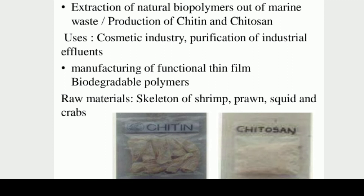Extraction of natural biopolymers out of marine waste includes production of chitin and chitosan. Uses include the cosmetic industry, purification of industrial effluents, manufacturing of functional thin films, and biodegradable polymers. Raw materials are the skeleton of shrimp, prawn, squid, and crabs.